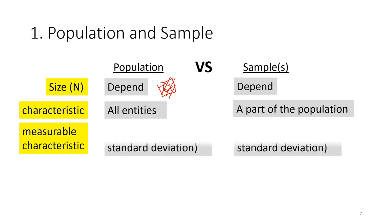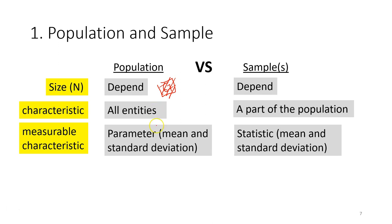For measurable characteristics, we use mean and standard deviation in both cases. For the sample we calculate mean and standard deviation; for the population we do the same, although the formula for standard deviation is slightly different. For the mean and standard deviation of a population, we call these parameters. For the sample, we call the mean and standard deviation statistics.